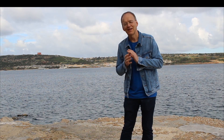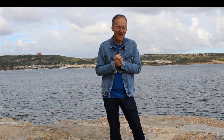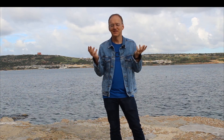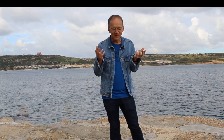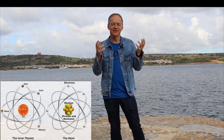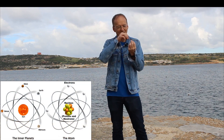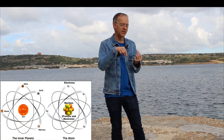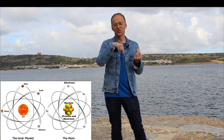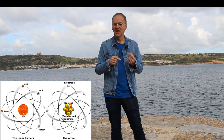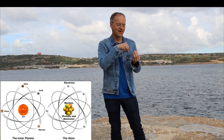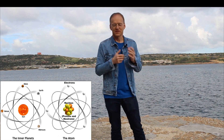Now, we are at the beginning of the 20th century and physicists were enthusiastic about the picture of the atom being a little solar system with electrons orbiting the nucleus as planets do for the Sun.